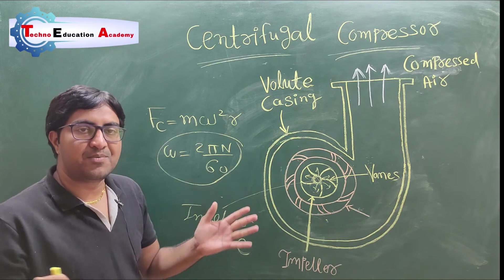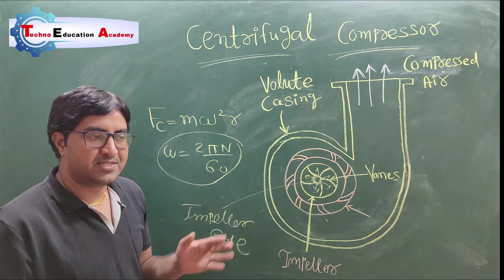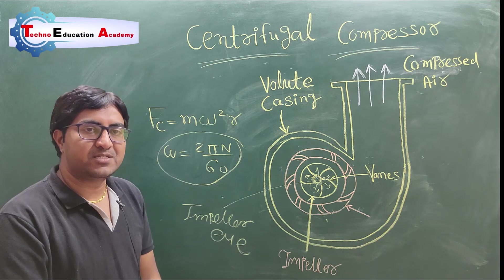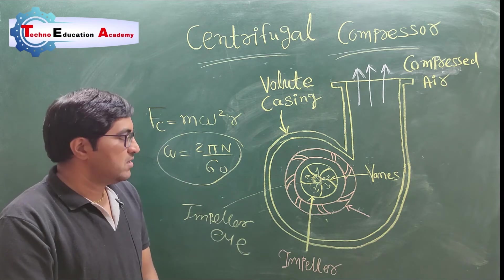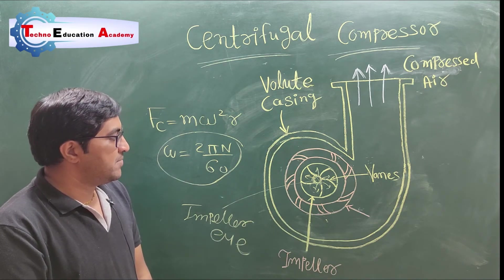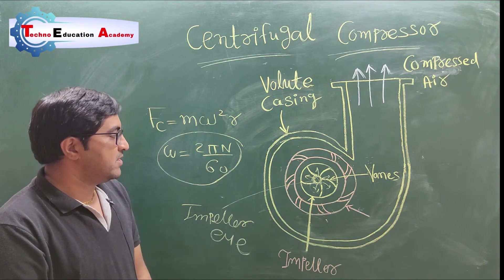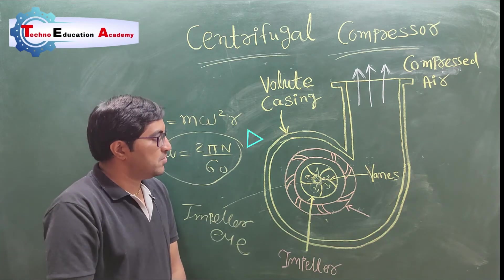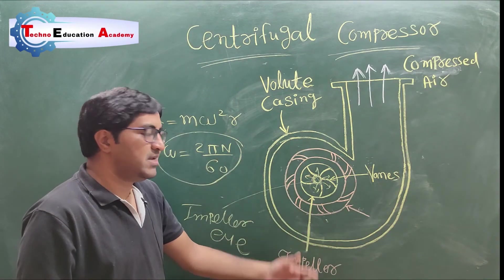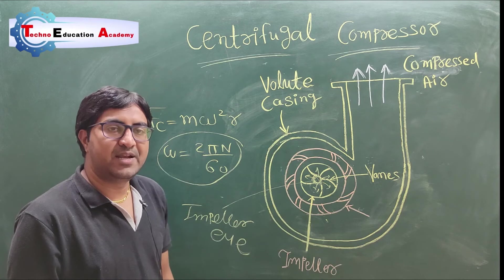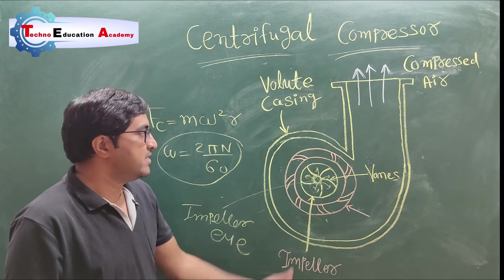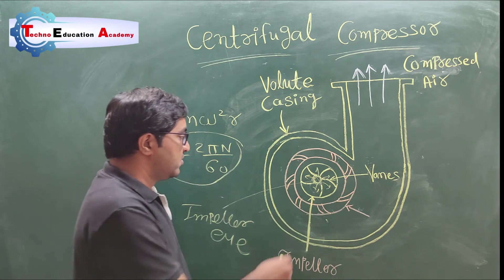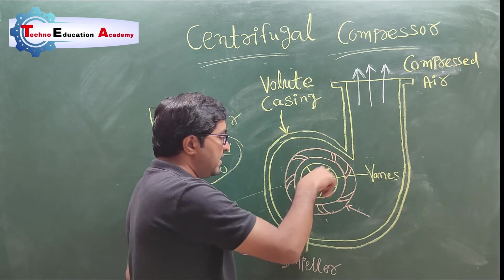Centrifugal force means the mass is away from the centroidal axis, whereas centripetal force means the mass is concentrated at the center. So there are two types of forces: centripetal forces and centrifugal forces. This compressor works on centrifugal force, so it is called a centrifugal air compressor.